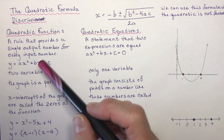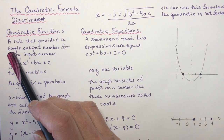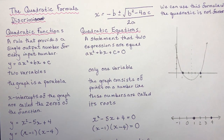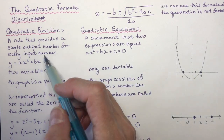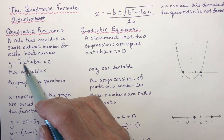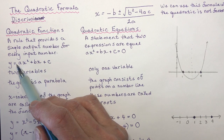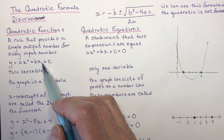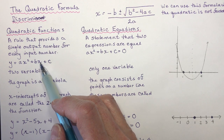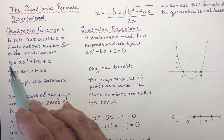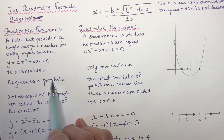So let's talk first about quadratic functions — a rule that provides a single output number for every input number. If I give you an equation like this and you plug in some value for x, where a, b, and c are constants, you will get an answer. That's why you can make a graph from it that looks like a parabola. So you have two variables, x and y, and the graph is a parabola.